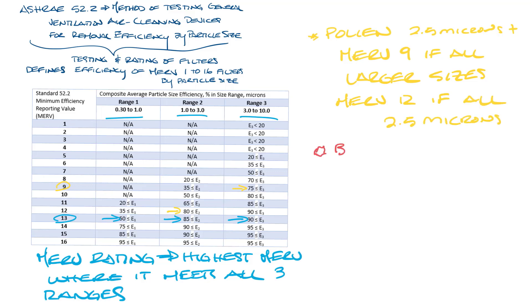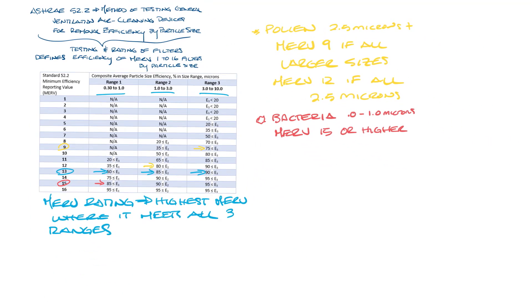If the concern is bacteria, we're looking at particles around 0.3 to 1 micron. So you'll want to select a filter that is 85% to 90% efficient in range 1, like a MERV 15. Okay, so let's move this over and make a little more room again.